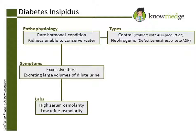We need to find the answer choice that will help differentiate central from nephrogenic diabetes insipidus. Choice A, serum osmolarity, is incorrect because in both conditions the serum osmolarity would be high and would not help differentiate the two.